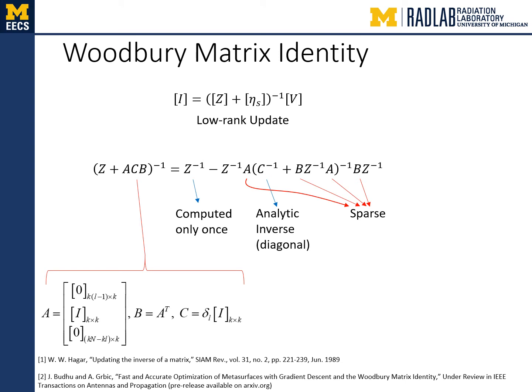The Woodbury matrix identity, also known as the Sherman-Morrison-Woodbury formula or the matrix inversion lemma, states that the inverse of a rank-r correction of some matrix can be computed by doing a rank-r correction to the inverse of the original matrix. The impedance matrix is updated along r of its diagonal elements by some small perturbation, so the matrix ACB forms the low-rank update. The inverse of the Z plus ACB matrix can be found using the expressions on the right-hand side. The inverse of the original unperturbed impedance matrix is computed only once per full gradient computation. The matrix C containing the perturbations is diagonal and can be inverted analytically. The remaining matrices are sparse, so sparse matrix routines further accelerate the computations.